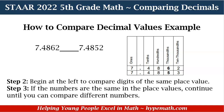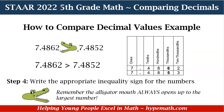Let's look at the thousandths place — they have different numbers. The top number has a six and the bottom number has a five. So we are going to write the appropriate inequality sign. Since six is greater than five, that means 7.4862, or 7 and 4,862 ten-thousandths, is greater than 7 and 4,852 ten-thousandths.